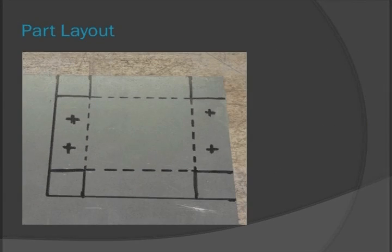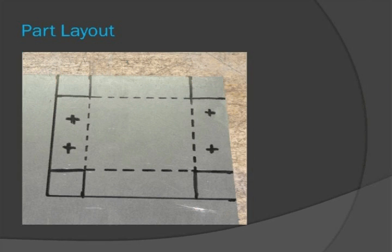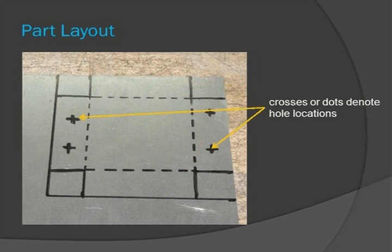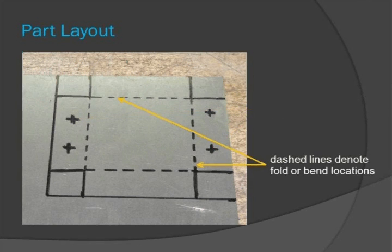Now that safety has been covered, we can mark our workpiece to denote the various sheet metal operations that will be used in fabrication. To denote a region that will be cut, use a solid line. For holes to be punched or drilled, mark the appropriate location with a cross or a dot. Bends are marked with dashed lines. If there are multiple bends in different directions, mark the flange appropriately — for example, up 30 degrees or down 90 degrees.